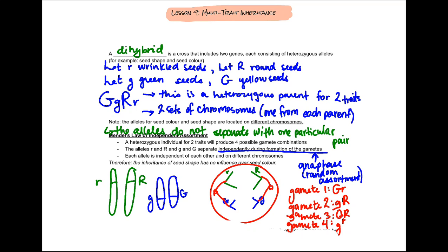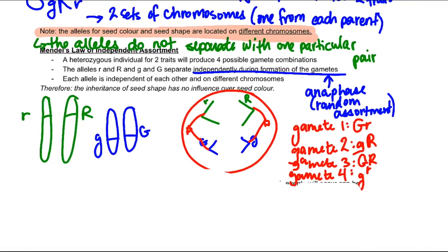So note, I put a note here and it's very important and I'm highlighting it to draw that importance to it. The alleles for seed color and seed shape are located on different chromosomes. They're located on different chromosomes, the alleles do not separate with one particular pair.